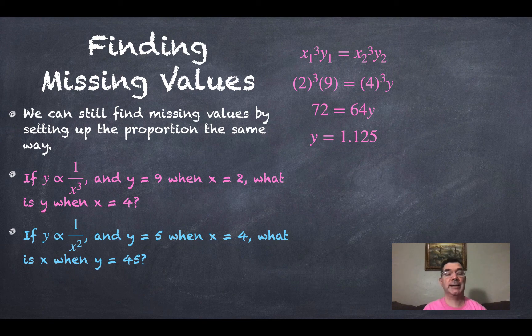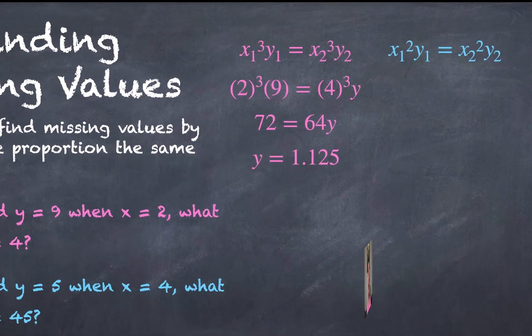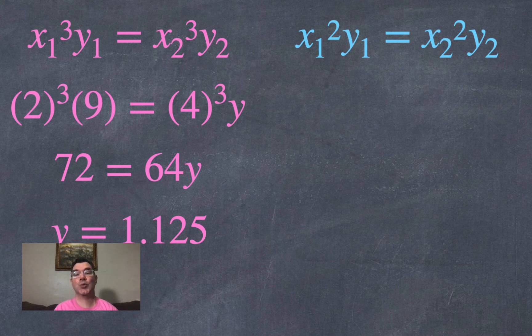The next part is if y is inversely proportional to x squared and y is 5 when x is 4, then what is x going to equal when y is 45? So I set up the equation pretty much the same way but now it's x₁ squared times y₁ is going to equal x₂ squared times y₂.